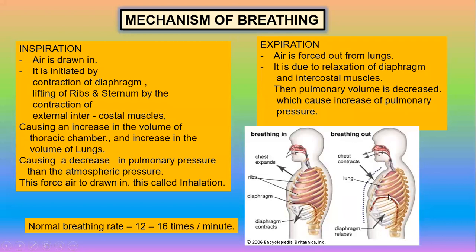During expiration, the diaphragm relaxes, as well as the ribs and sternum and the muscles in between; they relax and move inwards. The diaphragm moves upwards. Then the thoracic volume decreases, pulmonary volume decreases, and pressure increases. The increased pressure pushes air from the lungs out through the nostrils. That process is called exhalation. Together, breathing in and breathing out constitute one breath, and 12 to 16 breathing cycles occur per minute — that is the rate of breathing.